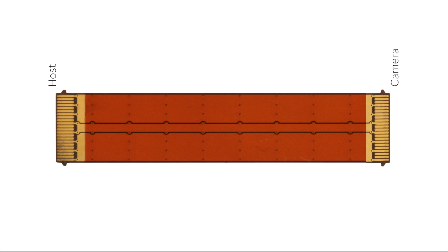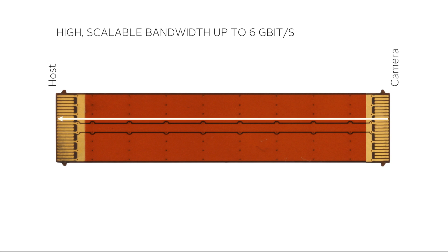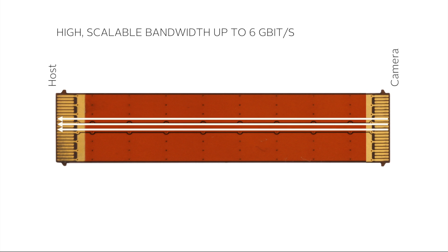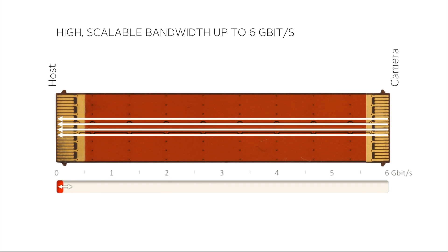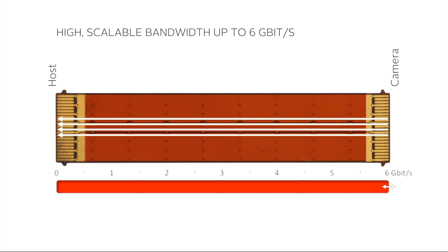One benefit of MIPI CSI2 technology is its high bandwidth of up to six gigabits per second of net image data. Furthermore, its image data stream is scalable. Each of the four image data lanes has a bandwidth of up to 1.5 gigabits per second, and system integrators can choose to use one, two, three, or all four lanes depending on their system requirements. So the MIPI CSI2 bandwidth can be flexibly adjusted from 0.2 to 6 gigabits per second.